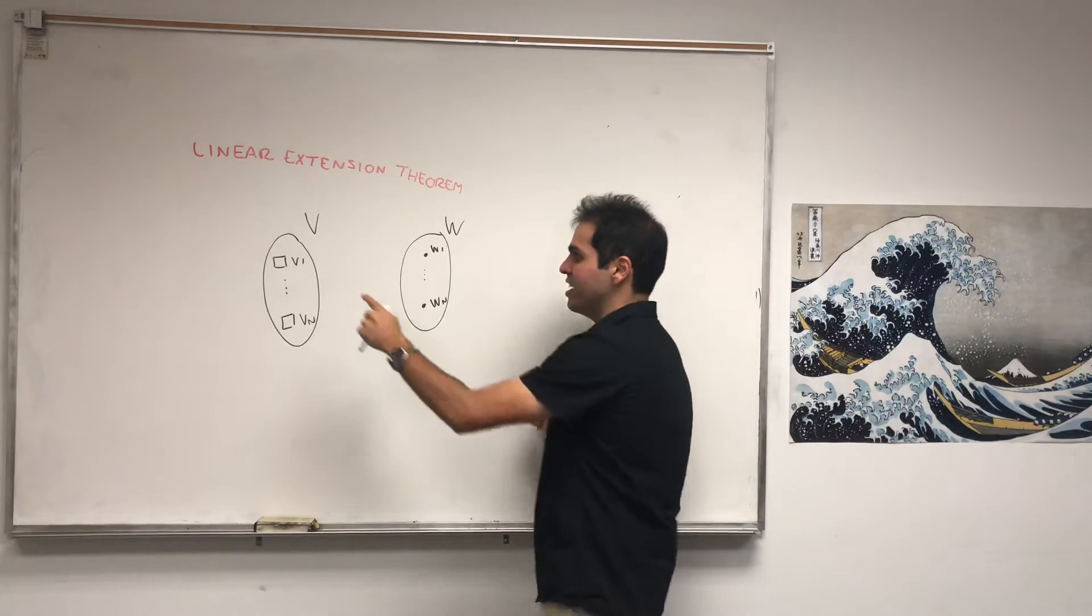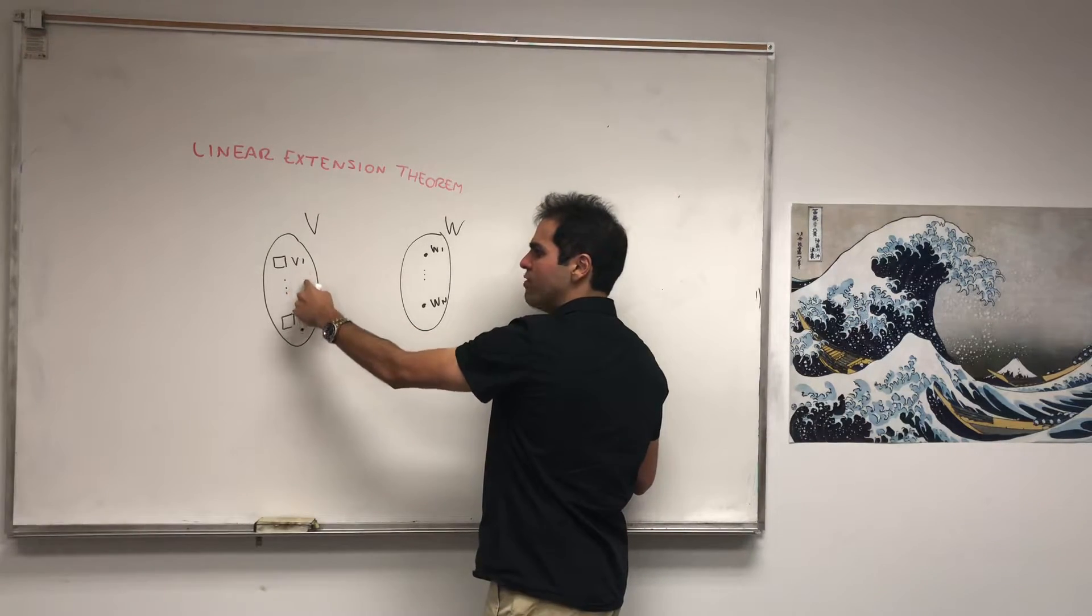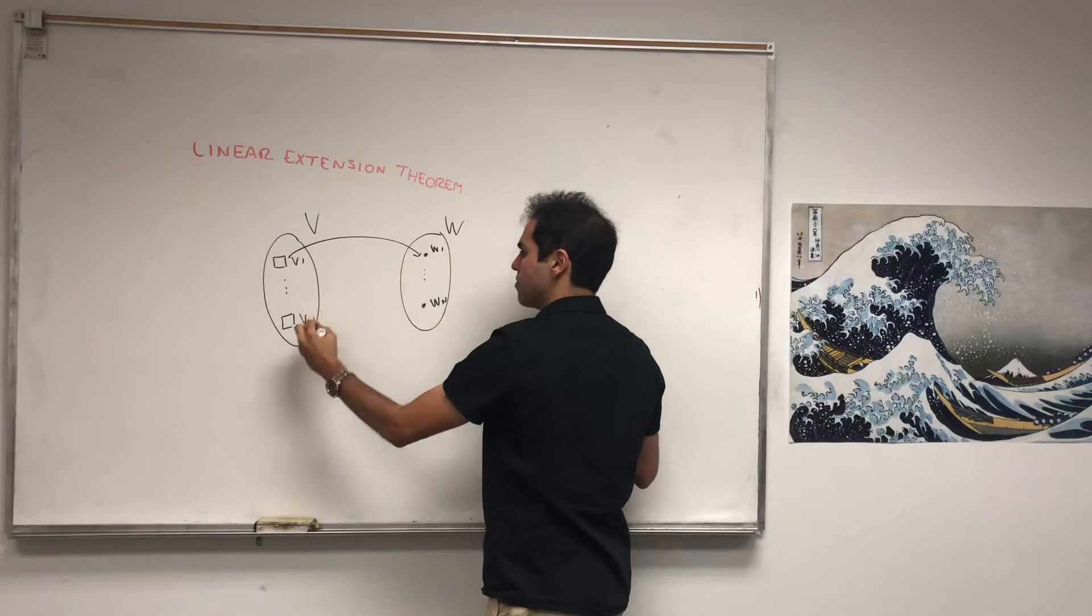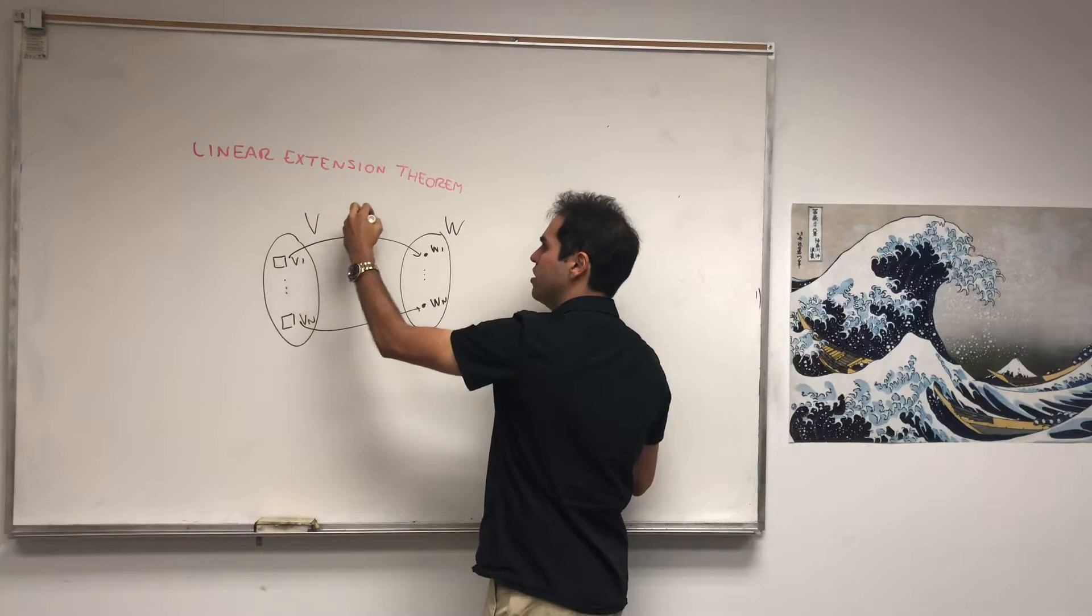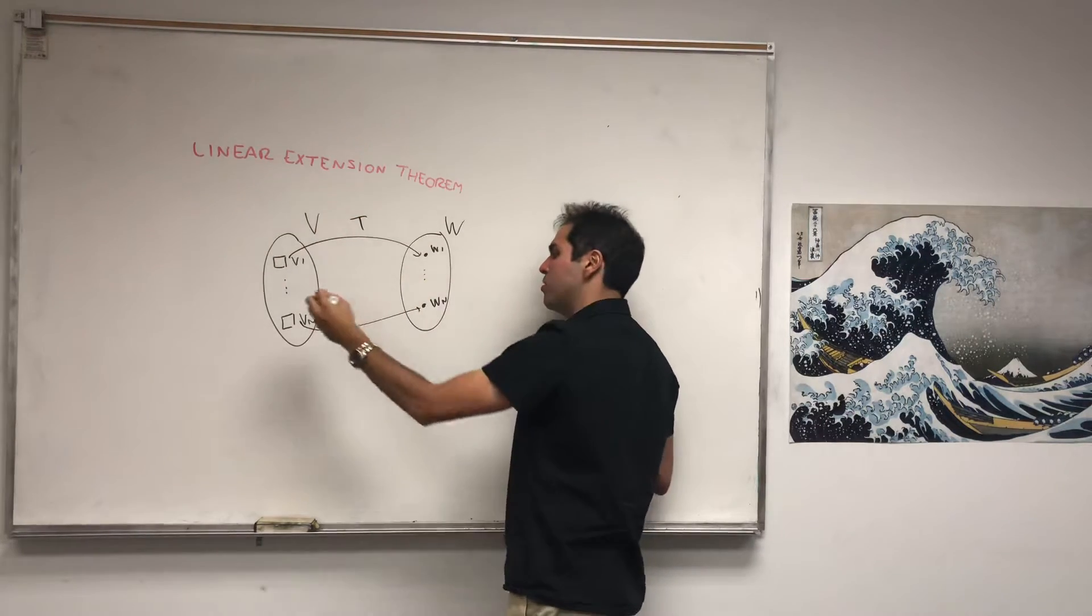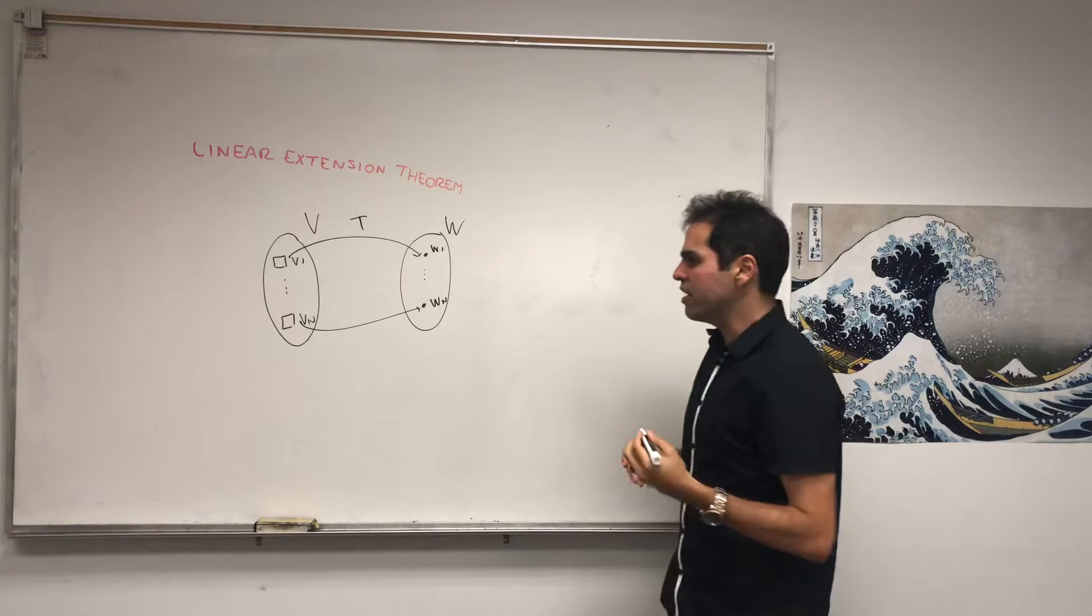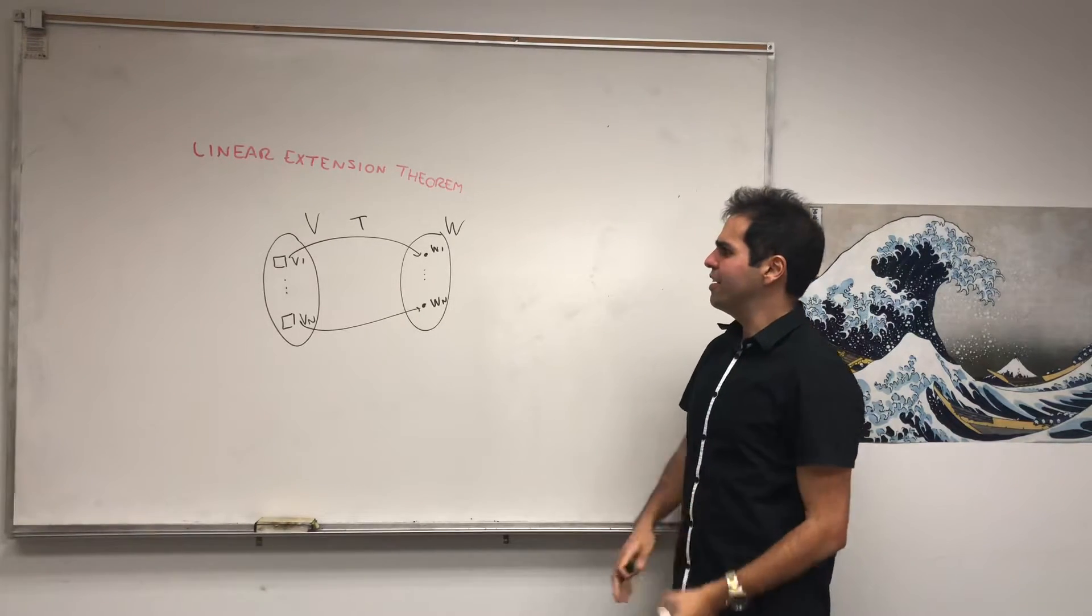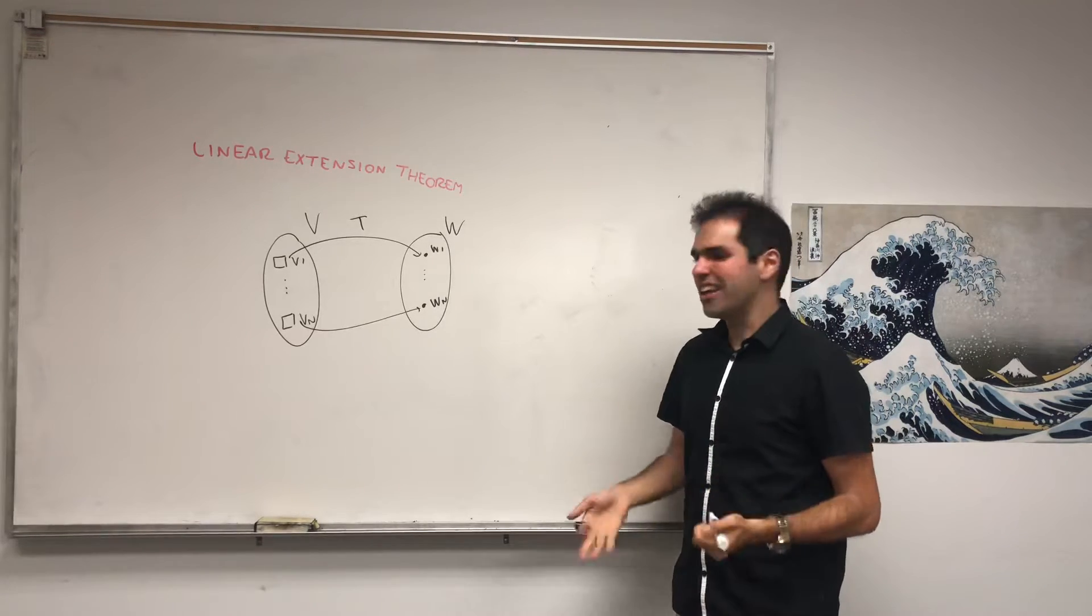Then what that theorem says is that there is exactly one linear transformation that maps each vector here to the corresponding vector here. So such that T of V1 is W1, T of V2 is W2, etc., up to T of Vm equals Wm.